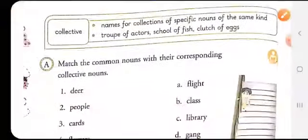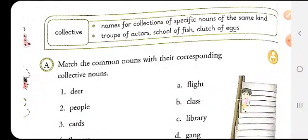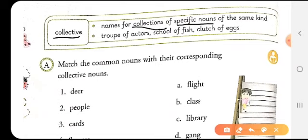Next we have the collective noun. Let's see what a collective noun is. It is the names for collection of specific nouns of the same kind. So the collection of specific nouns of same kind are termed under collective nouns. Like troop of actors, school of fish, clutch of eggs.